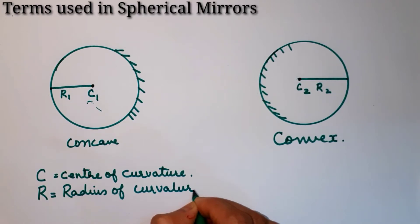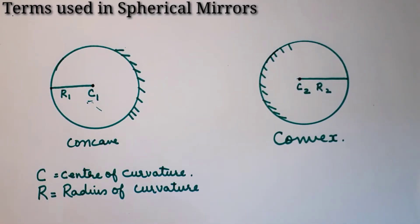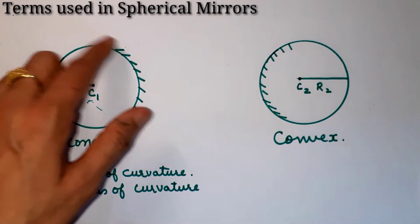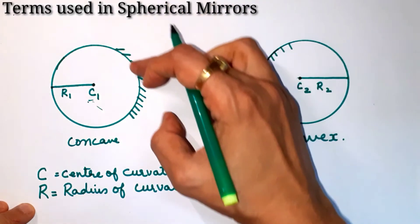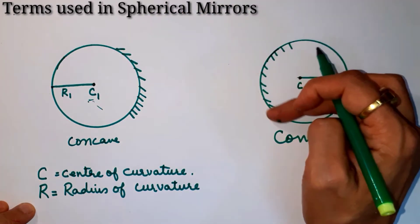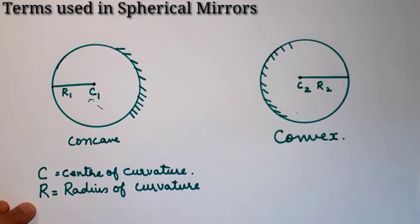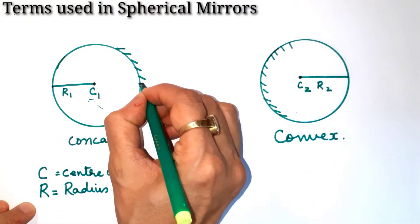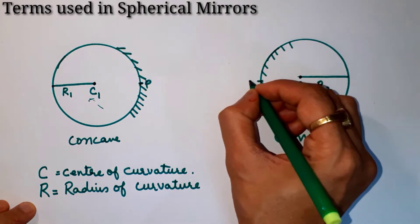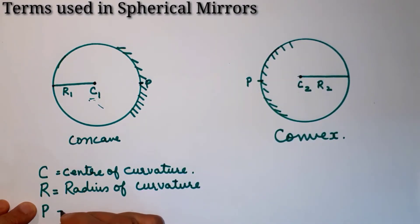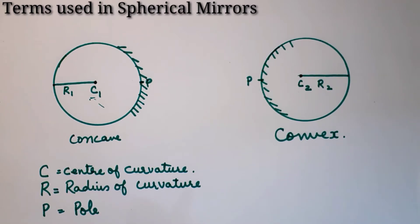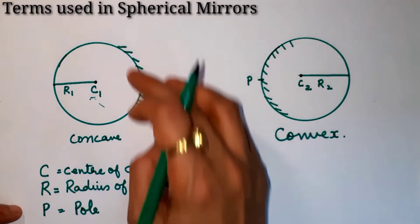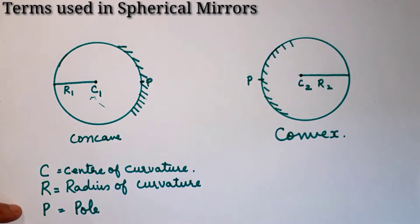Now when we talk about the pole — from this sphere you have taken a part which has become your concave mirror. The center point of the mirror is called the pole, and it is denoted as capital P. So the pole is the midpoint, or you can say the central point, of the part of the sphere.